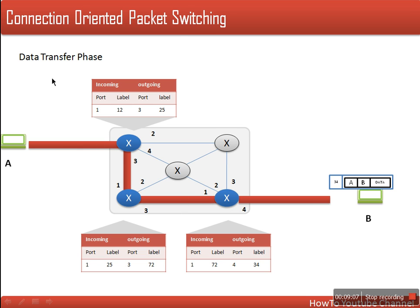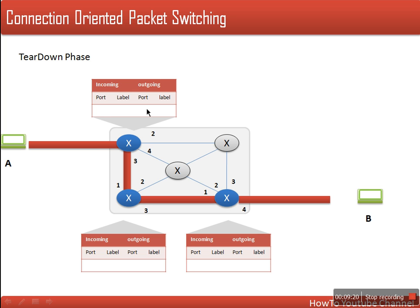So this is connection oriented packet switching. Once this node is done with its transmission, this node will finally send a teardown packet. What this packet will do is clear that entry in every routing table related to their communication. Thank you very much for watching.